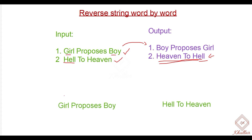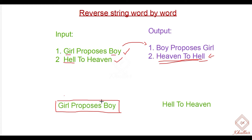So let's look at the approach to achieve this. We have an input string. In Java, the JDK provides a method to split a string. We can simply split the string on the basis of a space separator. Once we do that, the output we get is an array of strings, or simply an array of words. We'll get an array of words — at index 0 we get 'girl', at index 1 we get 'proposes', at index 2 we get 'boy'. There are multiple approaches to achieve this result. Today we will discuss one approach: how to reverse a string word by word using a stack.